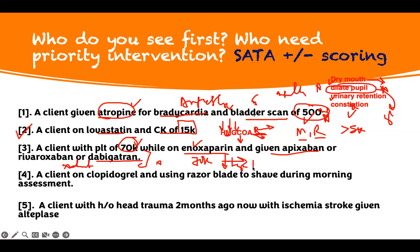Enoxaparin is a heparin derivative. So they saw the patient and changed it to apixaban or the direct oral anticoagulants — rivaroxaban or dabigatran. All these are what you put the patient on when heparin-induced thrombocytopenia occurs. Now that the patient has been placed on this new medication, there is no urgency. We are treating the patient, so we don't need to prioritize seeing them.